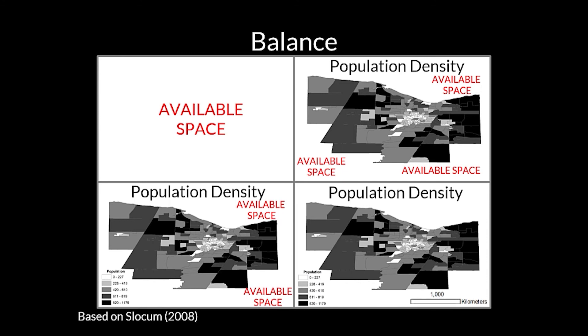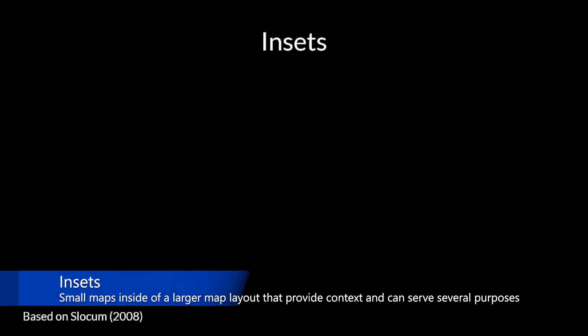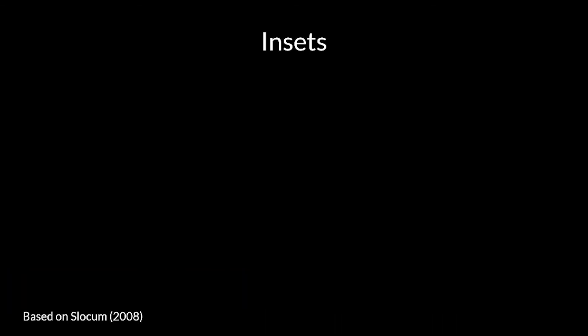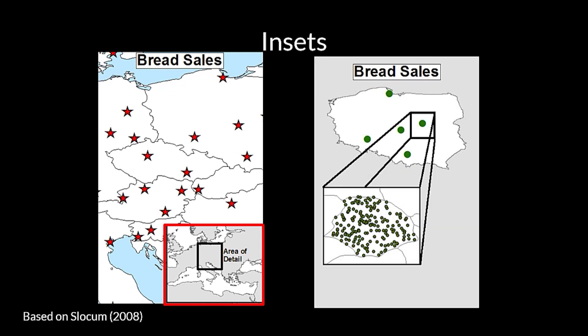Next, I'll tell you about insets and why they are an important map element for providing context to the map viewer. Insets are often small maps inside of a larger map layout that provide context and can serve several purposes. For example, insets can be used to locate the primary mapped area — the inset map on the bottom right corner is used to show where in Europe the area of detail in the main map is located. Conversely, inset maps can also be used to enlarge important areas or show areas that are congested with large numbers of features, as seen in this example where a congested area has been enlarged to show specific details.